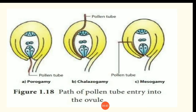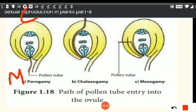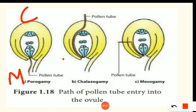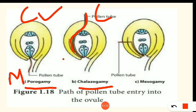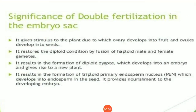Jab pollen tube aata hai, jab uski entry hoti hai, jab micropylar end ki taraf hoti hai — yeh uska micropylar hai aur yeh uska chalazal end hai. Toh micropylar end ki taraf jab entry hoti hai, toh is type ko bolte hain porogamy, aur mostly hamesha micropylar end se hi entry hota hai pollen tube ka. Jo second type hai, jab chalazal se entry hoti hai, toh is type ka naam hai chalazogamy. Aur jo third type hota hai — integuments, aapko pata hai hamaara jo anatropous ovule hai woh bitegmic hai — toh jab integuments ke through pollen tube ki entry hoti hai, usko bolte hain mesogamy.